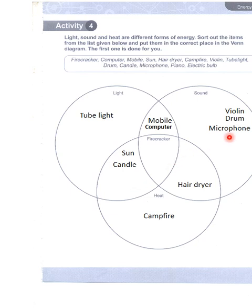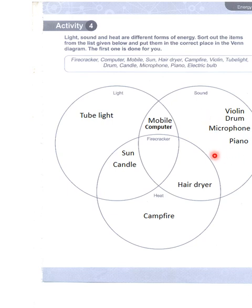Then the microphone — microphone gives us only sound energy. And then piano also gives us only sound energy. And then electrical bulb — یہ ہمیں light energy دیتا ہے۔